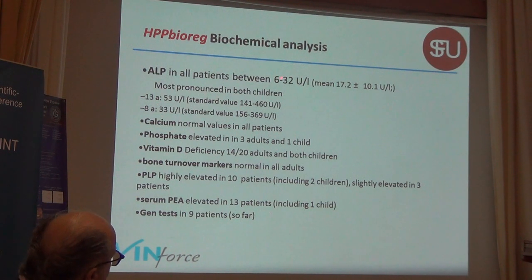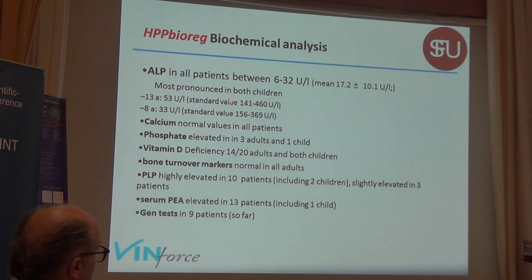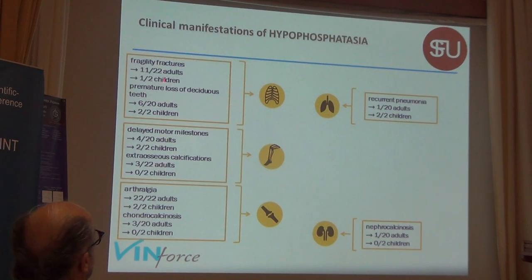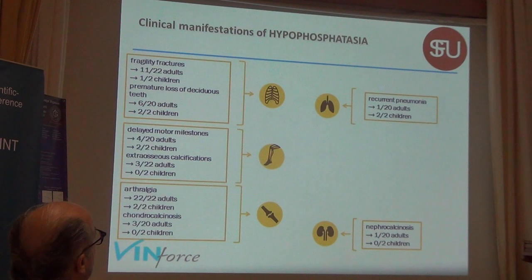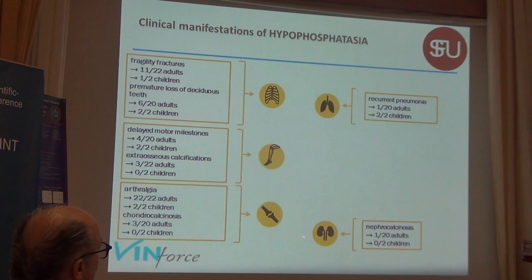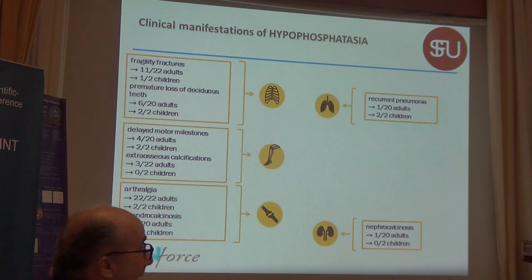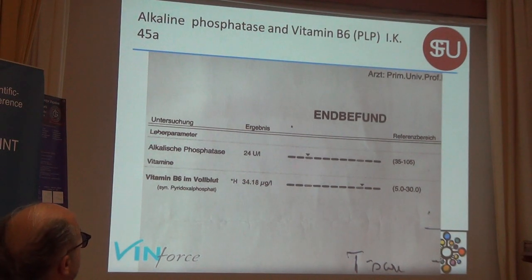These are the biochemical analyses in those patients showing specifically low ALP values — the lowest around 6 or even lower, with the highest around 30. In children the normal values are different due to age dependence. Looking at manifestations across different organ systems: we have fracture patients, patients with delayed motor development, arthralgia, chondrocalcinosis, nephrocalcinosis, recurrent pneumonia, and one patient with delayed or no fracture healing at all for 20 years.